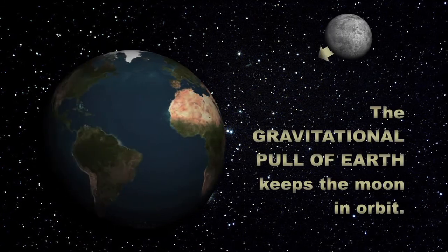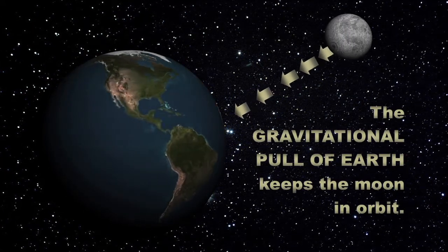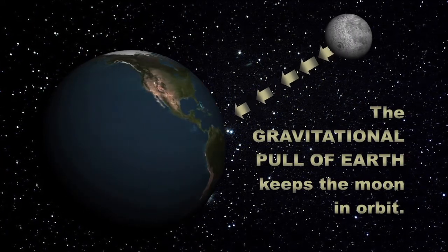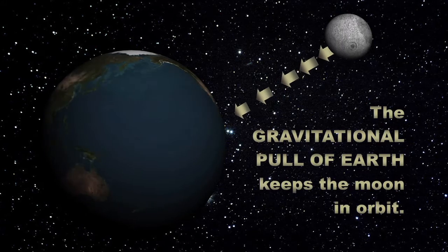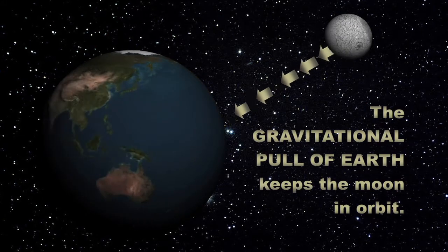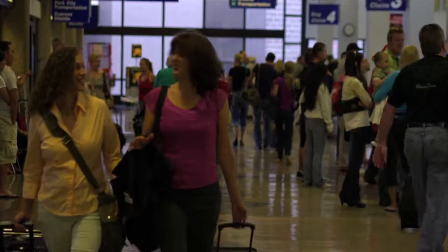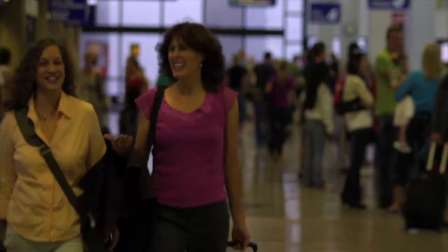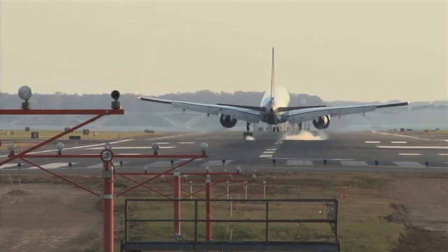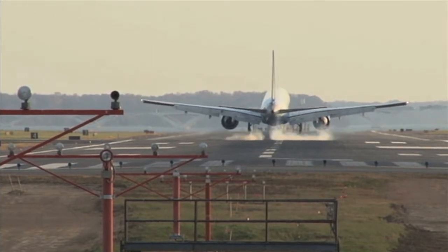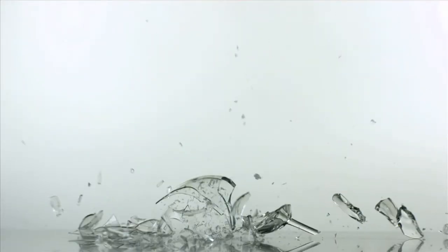Gravity is a force that attracts two physical objects according to their mass and the distance between them. The force of gravity is always present on Earth and attracts all objects to the Earth's surface. What goes up must come down.